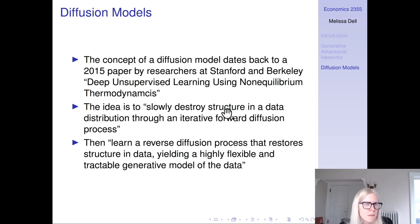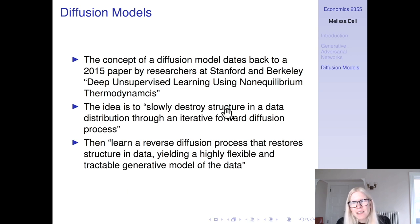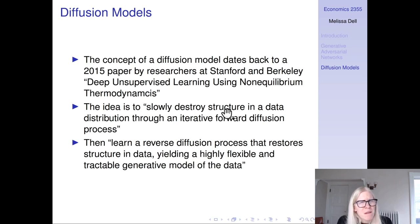The concept of a diffusion model dates back to a 2015 paper by researchers at Stanford and Berkeley called Deep Unsupervised Learning Using Non-Equilibrium Thermodynamics. The lead author on this paper is actually a physicist — there's an interesting tradition of people with an applied physics background making fundamental contributions to deep learning.